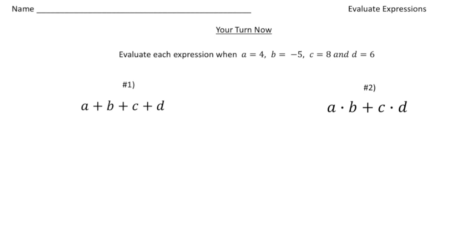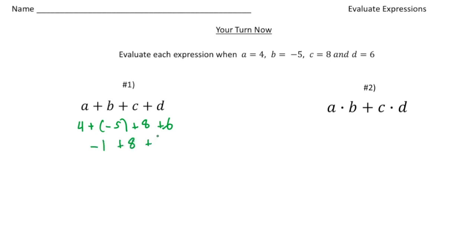Welcome back, let's see how you did on these practice problems. We have two expressions, and for both of these a is 4, b is negative 5, c is 8, and d is 6. The first one is a plus b plus c plus d. Replacing variables with numerical values: 4 plus negative 5 plus 8 plus 6. 4 and negative 5 is negative 1, then negative 1 plus 8 is 7, and 7 plus 6 gives us an answer of 13.